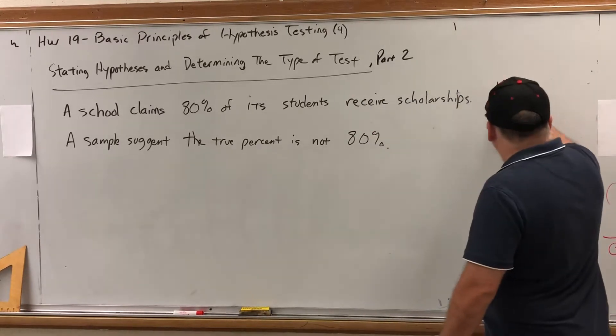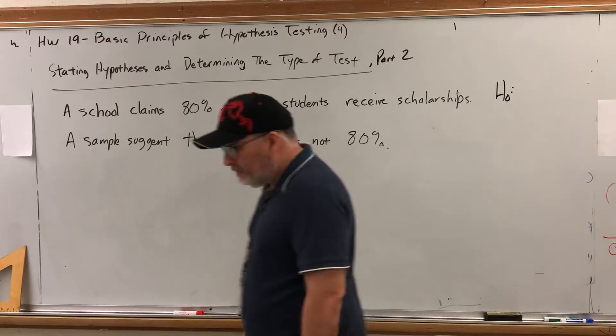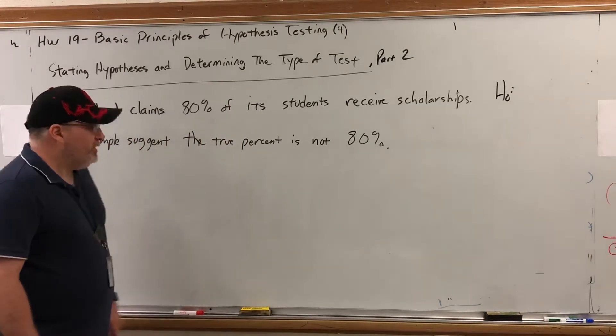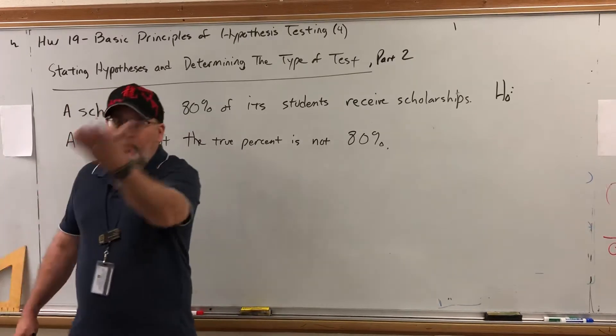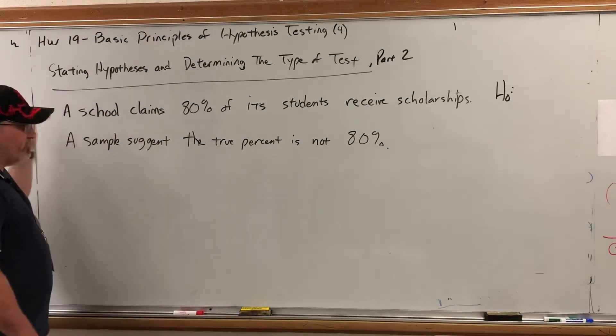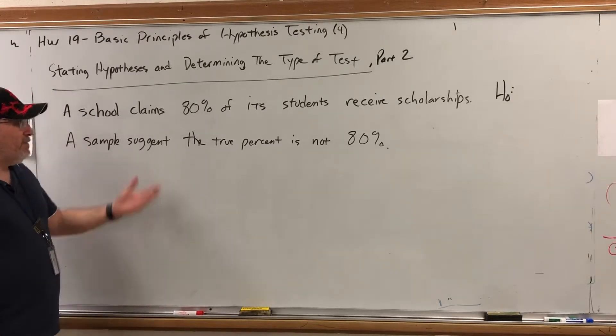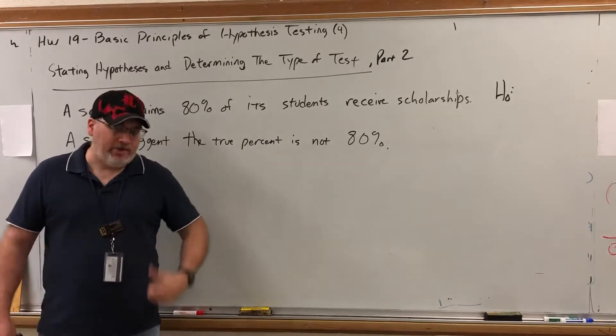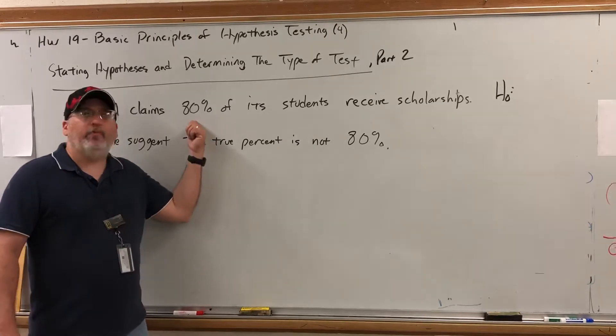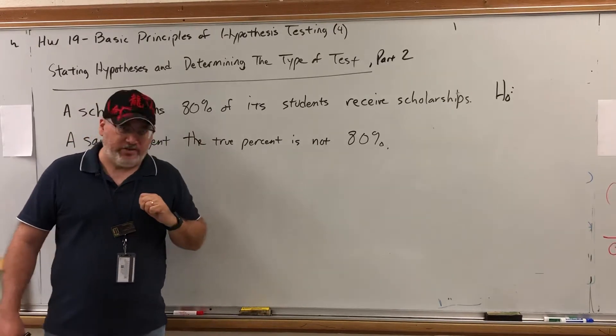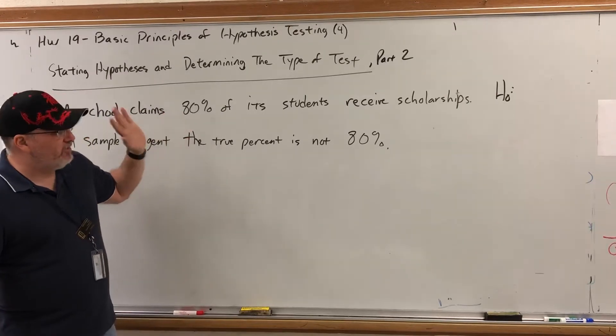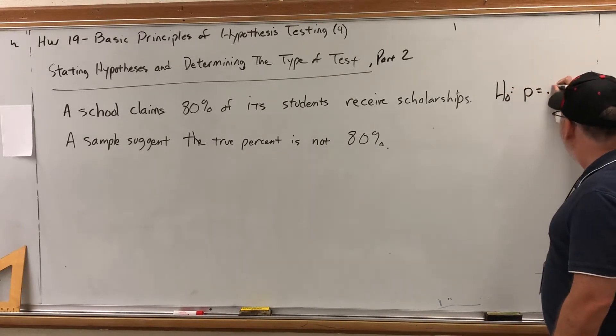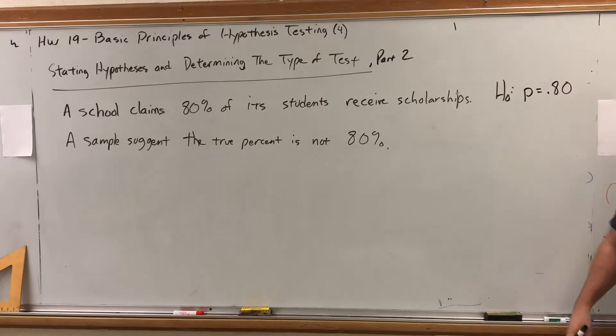When you write a hypothesis, null or alternative, the first thing you should do is decide what parameter are we making a claim about. And it's going to be one of two: it's going to be mu or p, population mean or population proportion. Which one is the sentence making a claim about? They claim 80% of its students receive a scholarship. In other words, they're claiming 80% of its population has a characteristic. This is a proportion. Proportion is synonymous with percent. So they're claiming that 80% of the population has a characteristic. The variable for population proportion is lowercase p, and we'll write it as a decimal. The school is claiming that p equals 0.80.